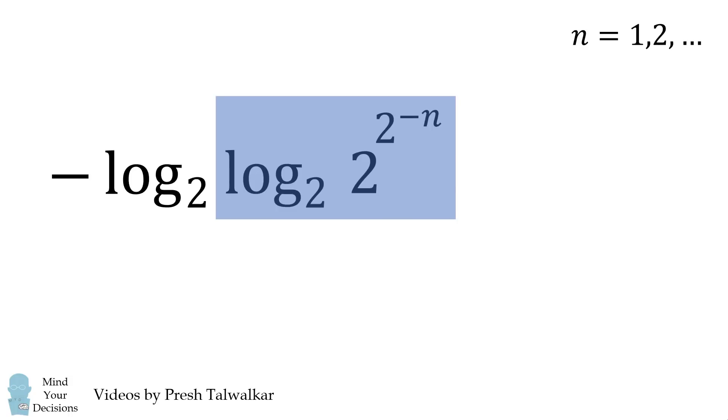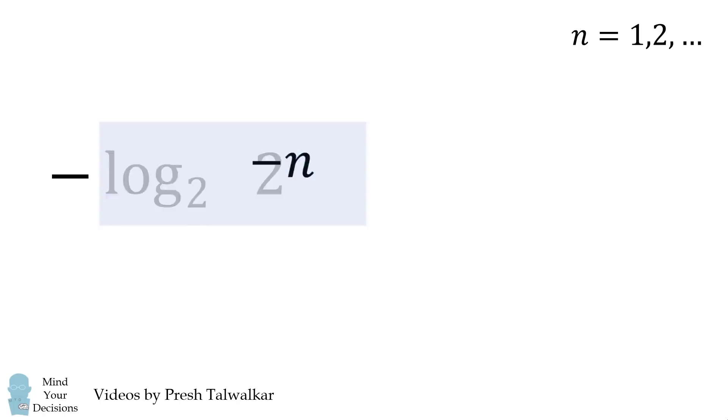We now evaluate log base 2 of this, which will be equal to 2 to the power of negative n. Evaluating log base 2 again, we get negative n. Then the opposite of negative n is equal to n.